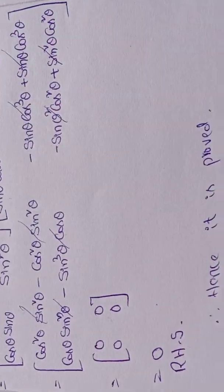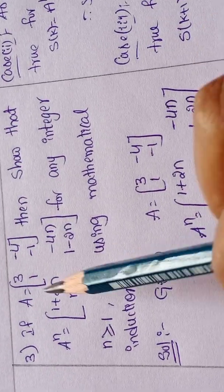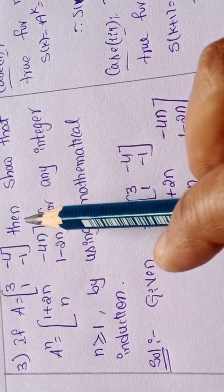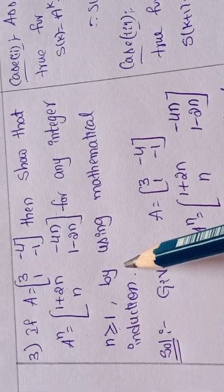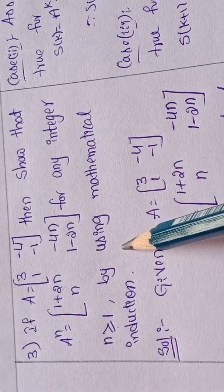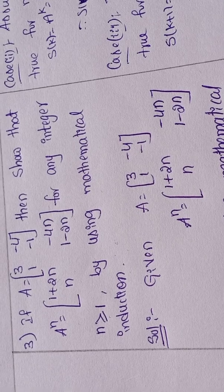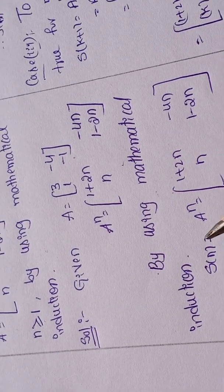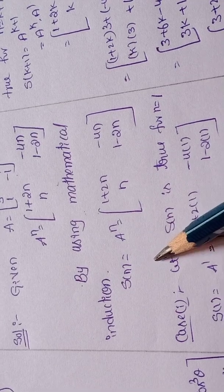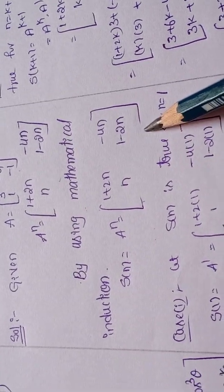After multiplication, totally it will get the zero matrix. This is RHS, hence it is proved. Next, third question: if A equals matrix [3, -4; 1, -1], then show that A power n equals [1+2n, -4n; n, 1-2n] for any integer n greater than or equal to 1. By using mathematical induction — same as the first question. S of n equal to A power n equal to [1+2n, -4n; n, 1-2n].